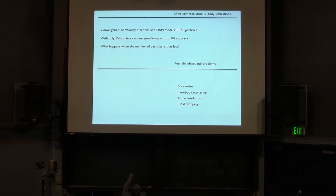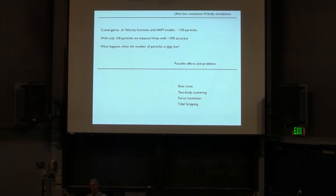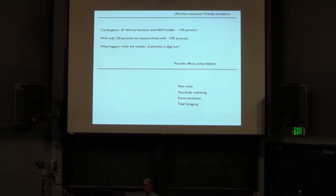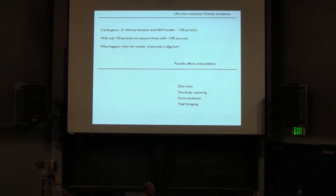We saw that convergence is achieved at 150 particles at about 5-10% accuracy. How is that possible? There are a lot of effects at play. The noise: the inner part, which defines Vmax, has about 50 particles and they simply fluctuate — shot noise. You expect about 20% variation, which would be way too much because the velocity function is very steep. But we'll see that it's actually not as bad. Two-body scattering: 150 particles — an open cluster — would dissolve very quickly because of two-body scattering. Let's look at how resolution and tidal stripping contribute.